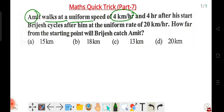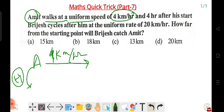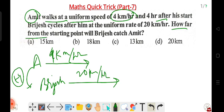So Amit walks at a uniform speed of four kilometer per hour. After four hours, his friend Brijesh starts cycling at a uniform speed of twenty kilometer per hour. The question asks: how far from the starting point will Brijesh catch Amit?